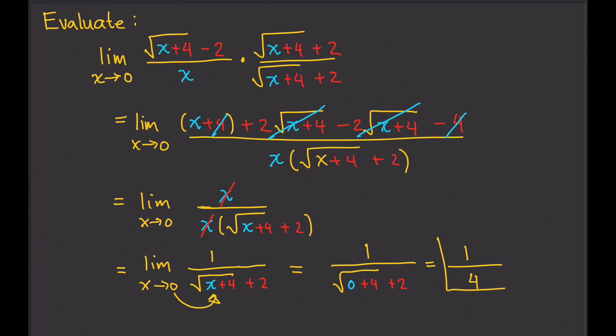So the limit of square root of x plus 4 minus 2 divided by x as x approaches 0 is 1 over 4.